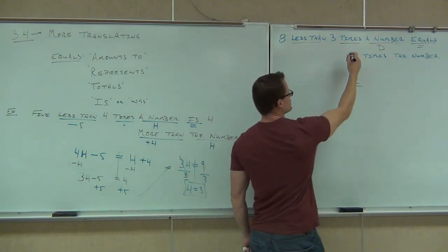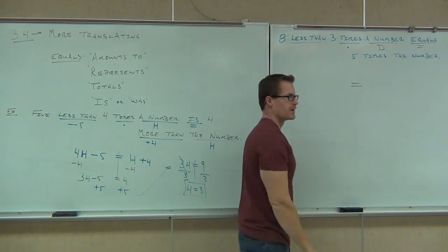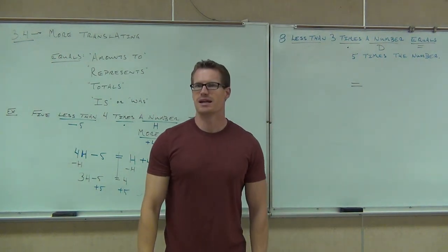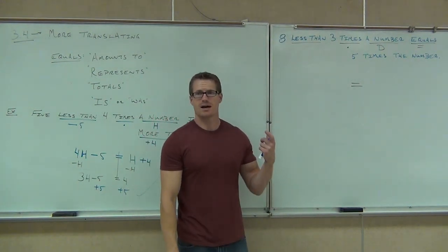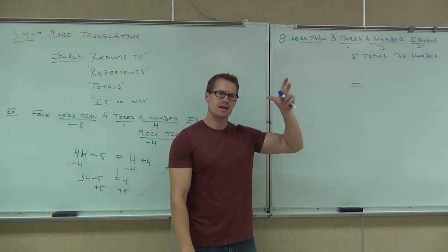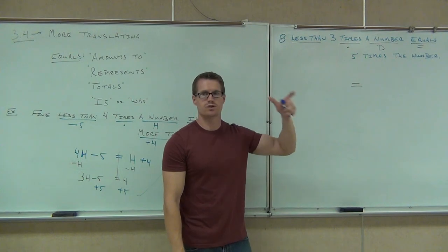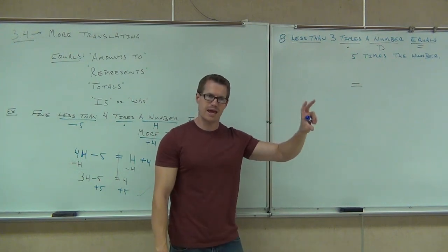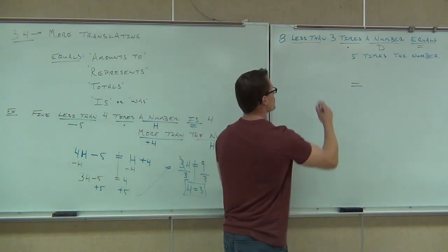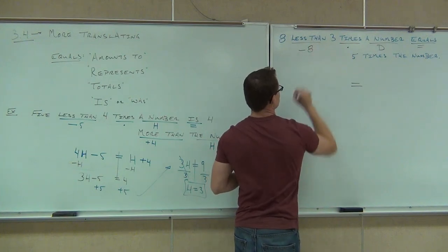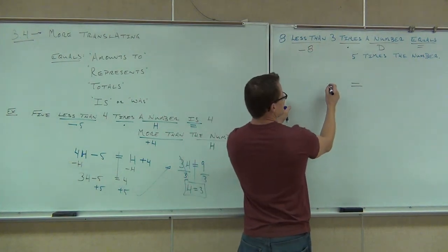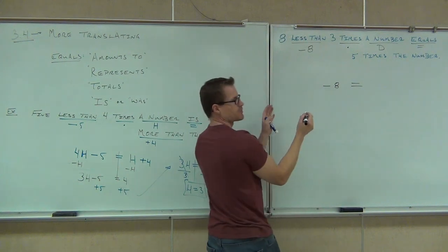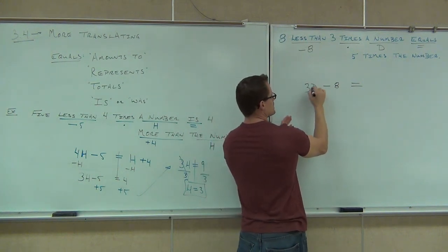Times. We know times means times. Less than. Eight less than. Is it going to be eight minus or minus eight? Minus eight. Good. The less than goes afterwards. If this had said eight minus, then that would be eight minus. Or the difference of eight and. Then eight would come first. What if it says less than or subtracted from? That than and that from mean afterwards. So this is minus eight. Let's work on the first part. I know I have eight less than. That's minus eight. Three times a number means three D in this case.